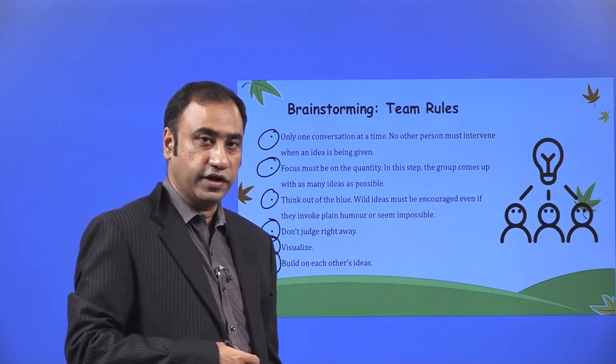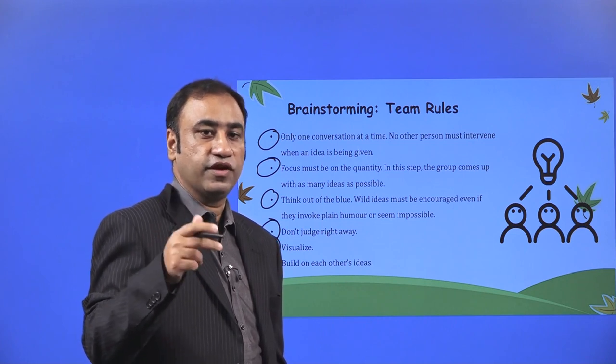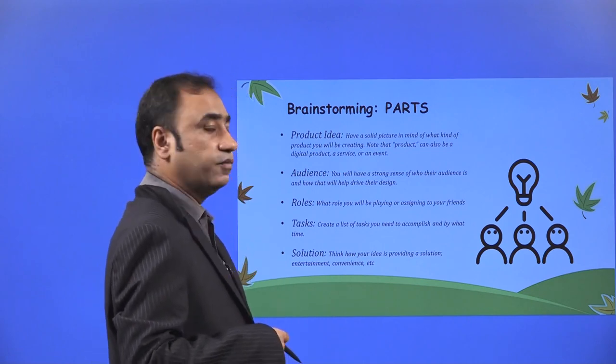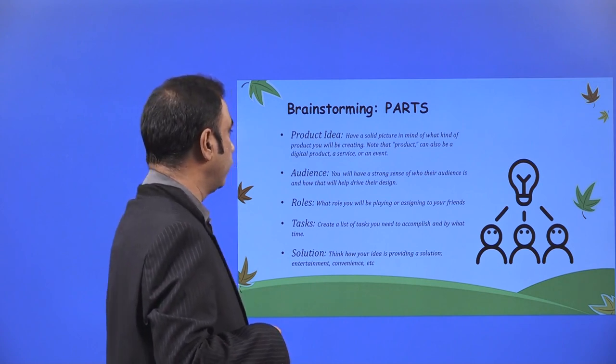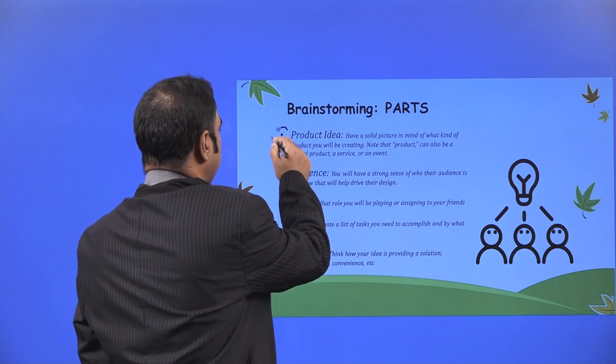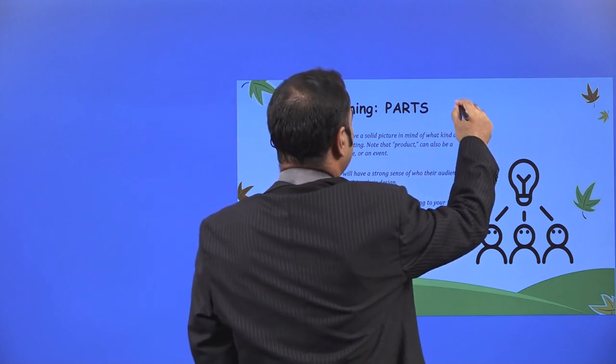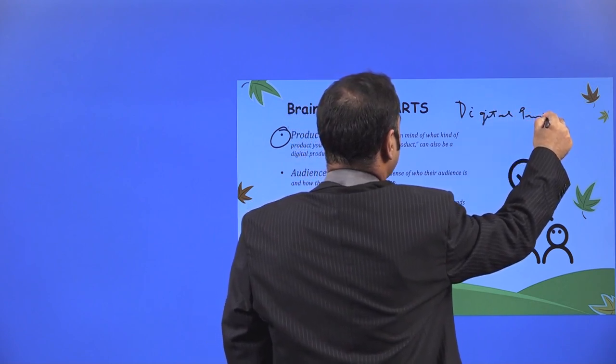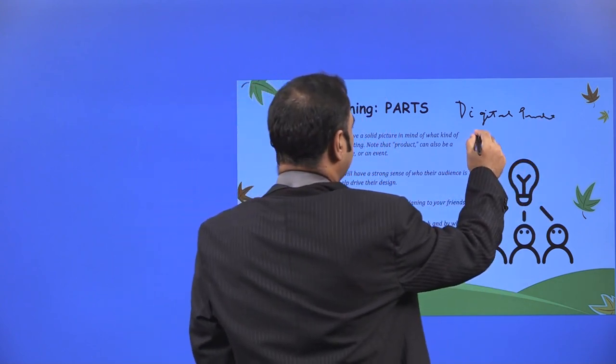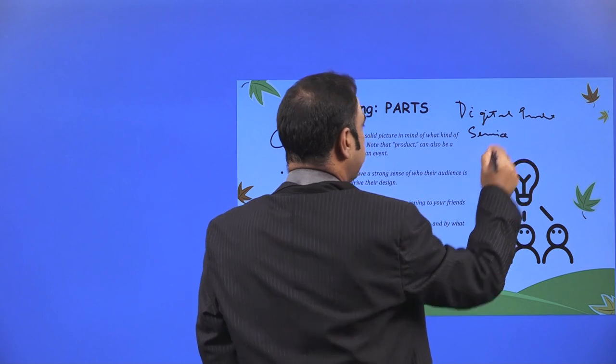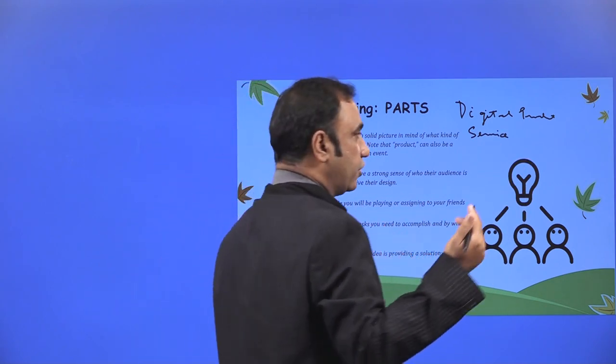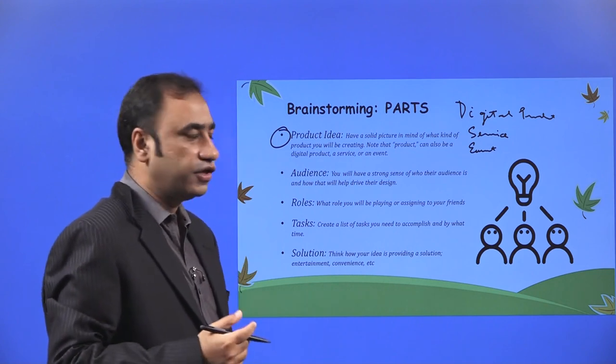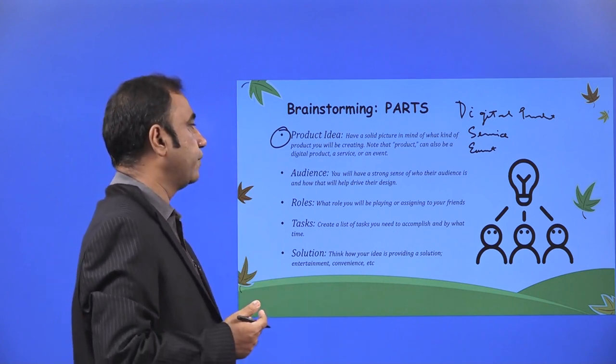Ideation stage—it is important not to judge right away when you are talking about an idea. Visualize. You have to visualize the idea and keep the end goal in objective. Build on each other's idea. As we've seen in the Apple iPhone example, how it was solving three different idea problems and merged into one product. Product idea: have a solid picture in mind of what kind of product you will be creating. Note that product can also be a digital product, a service, or an event. Anything can be a product.